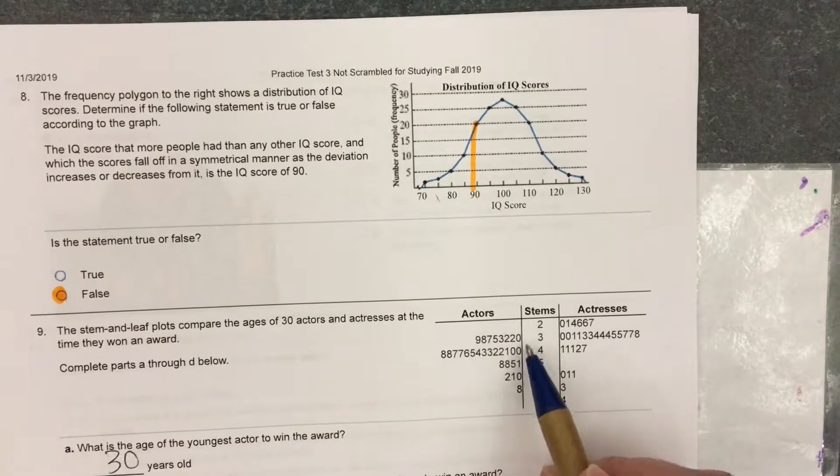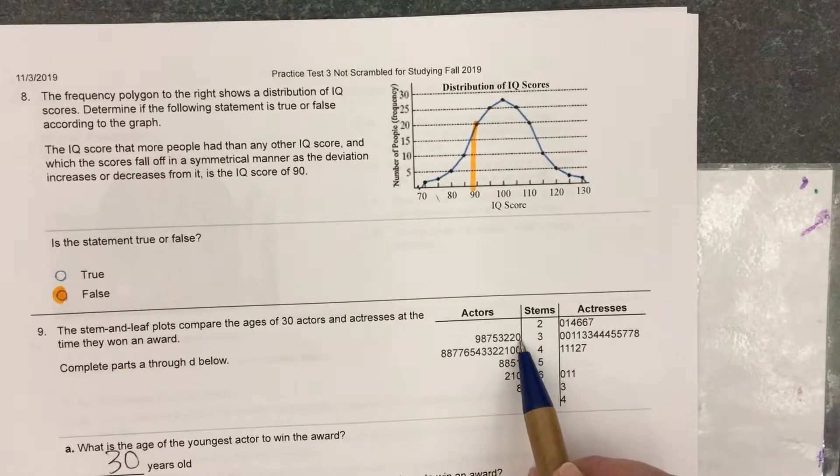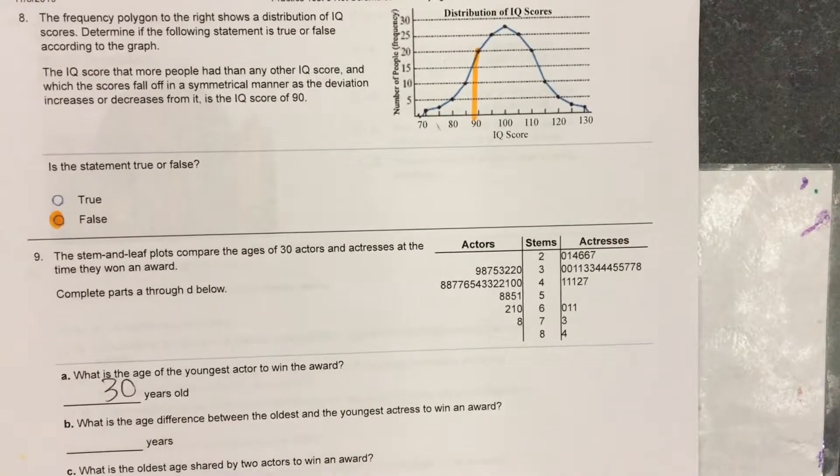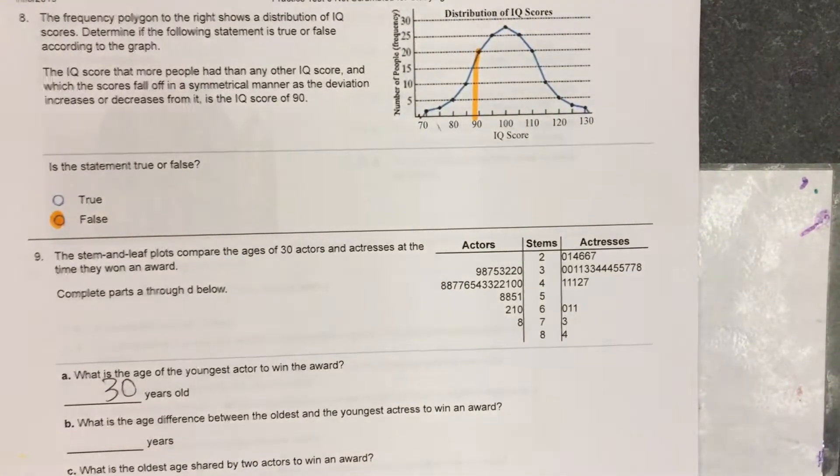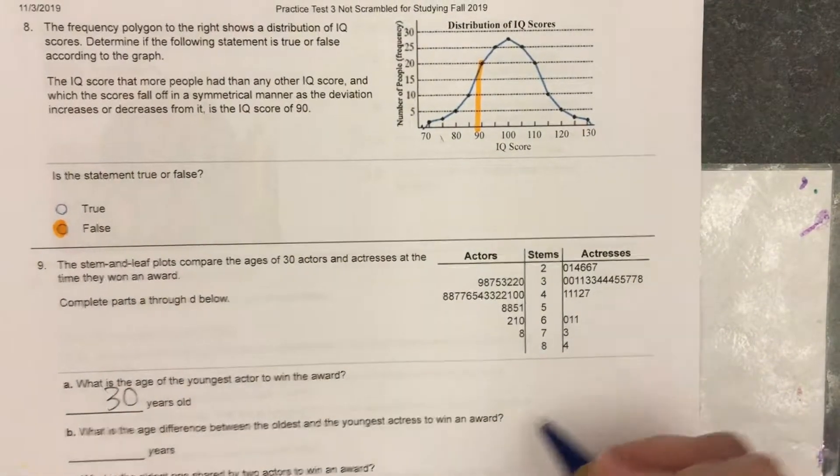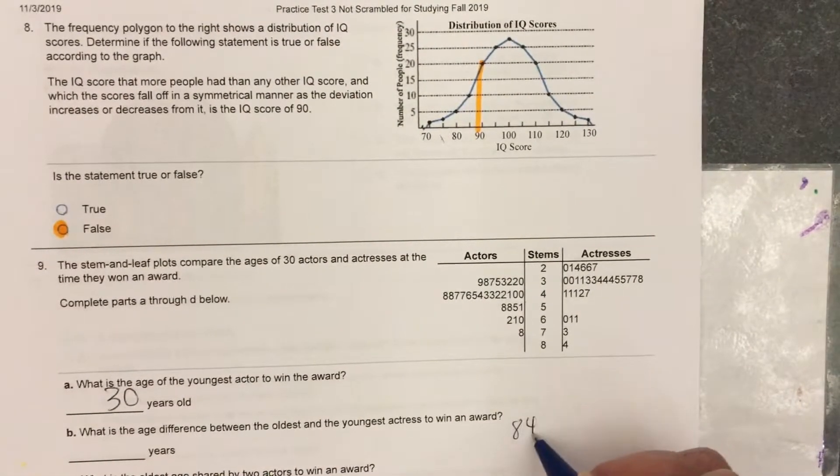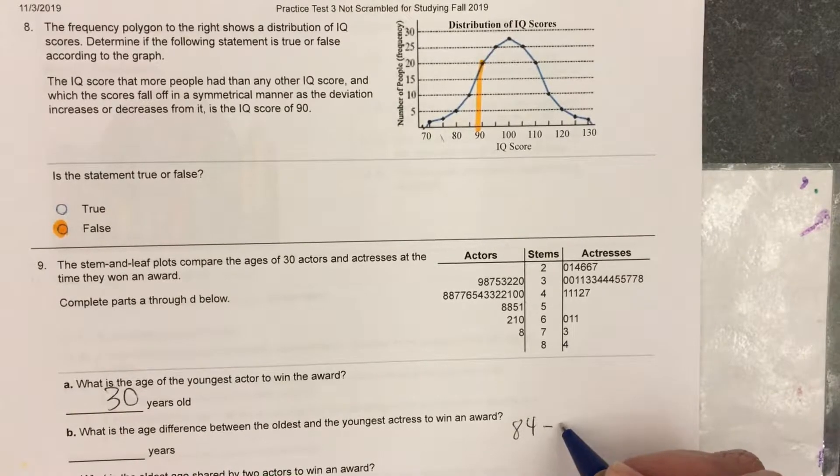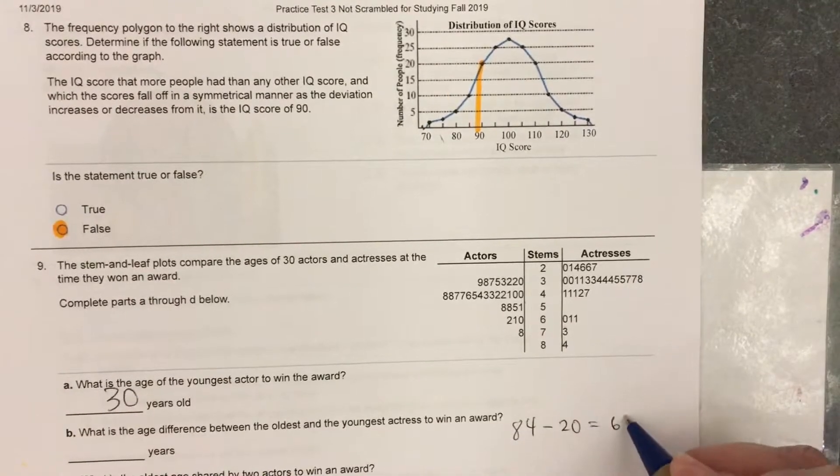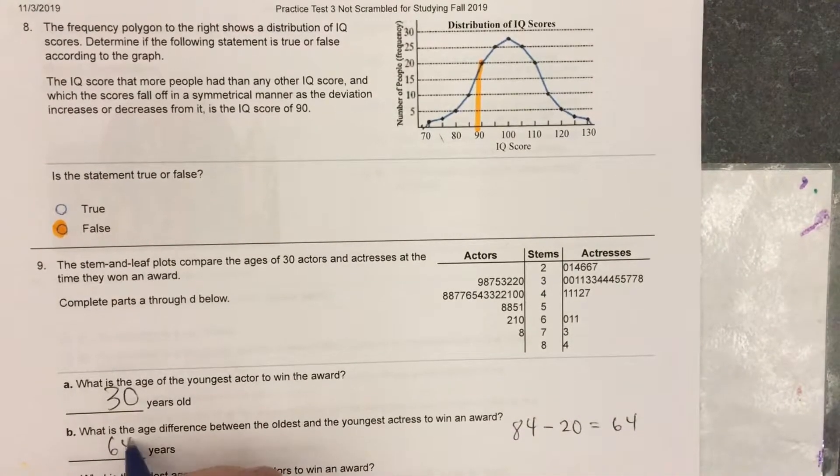So as I look on the actor side, I see 30 is the youngest. What is the age difference between the oldest and youngest actress to win an award? Well, the oldest actress was 84. The youngest actress was 20. 84 minus 20 is 64. 64 years.